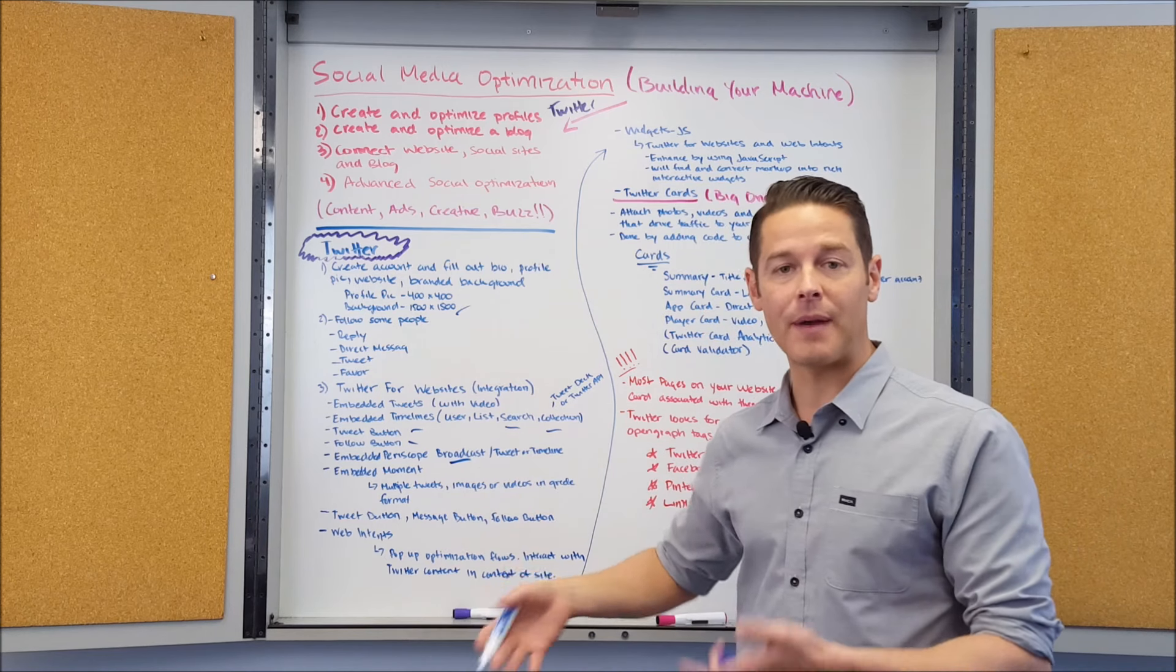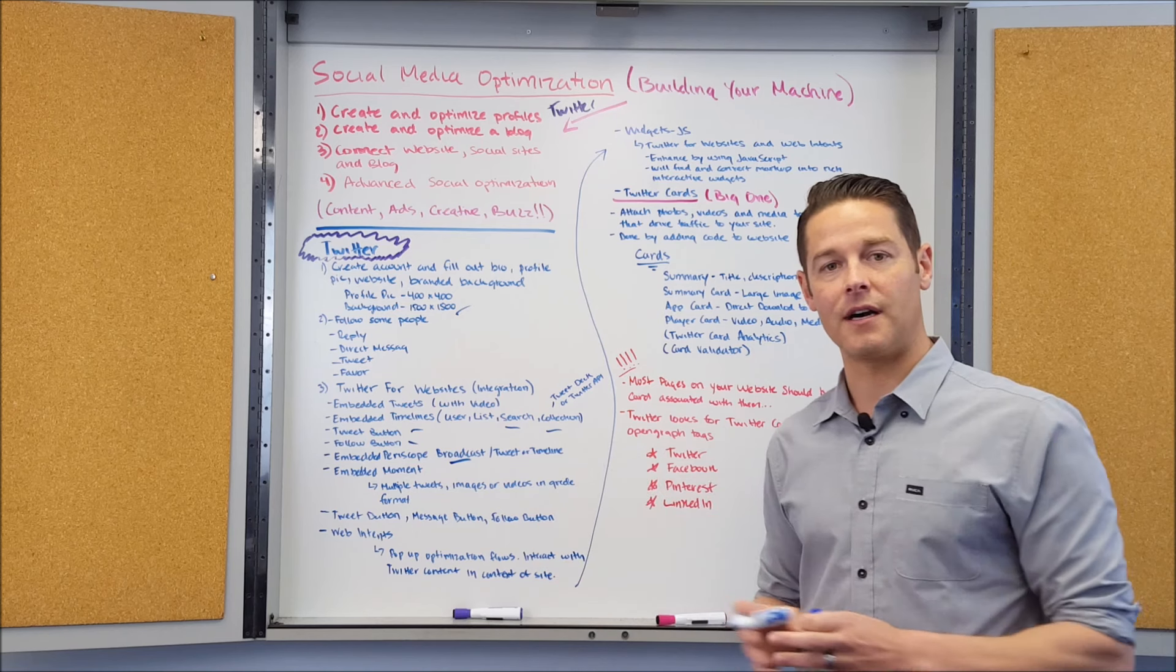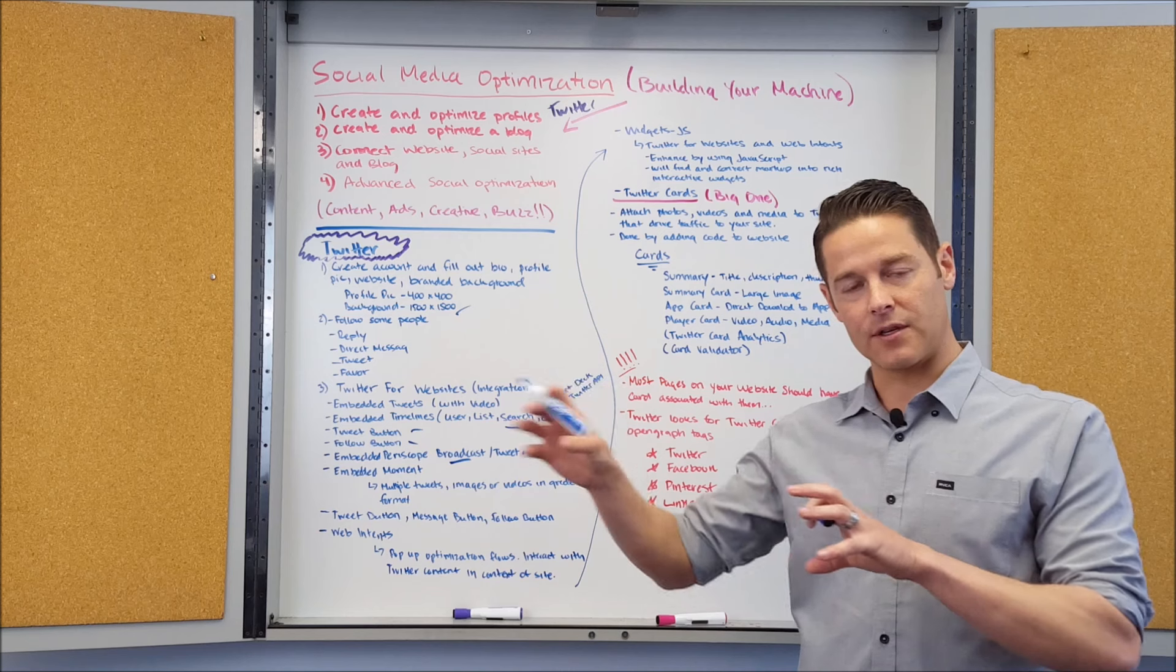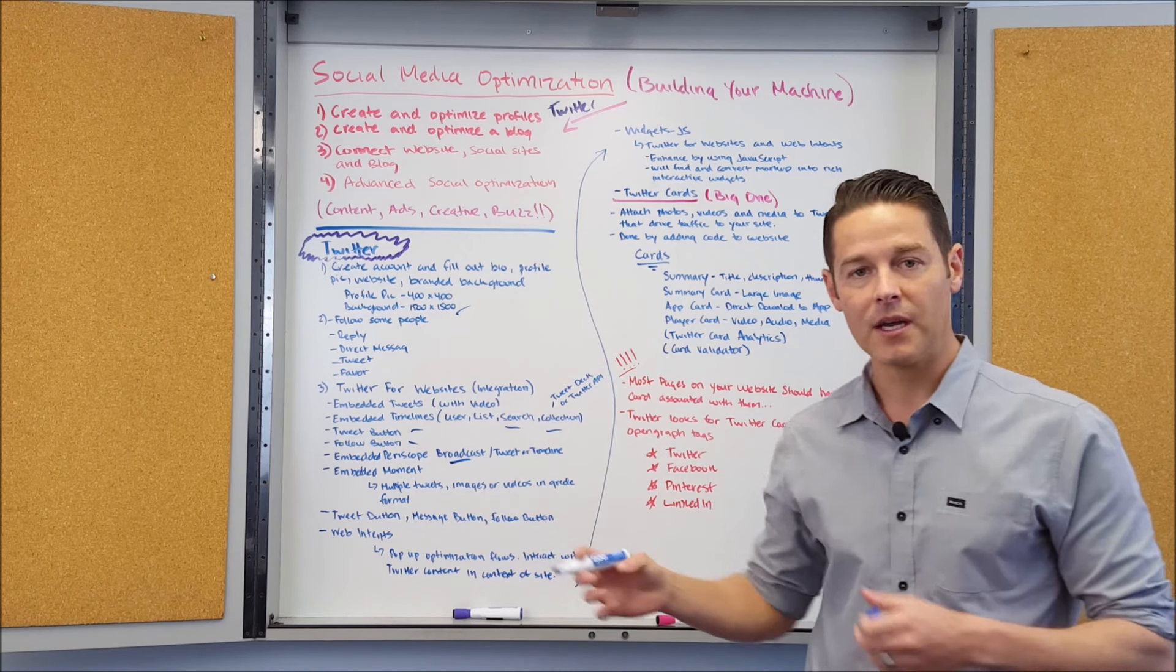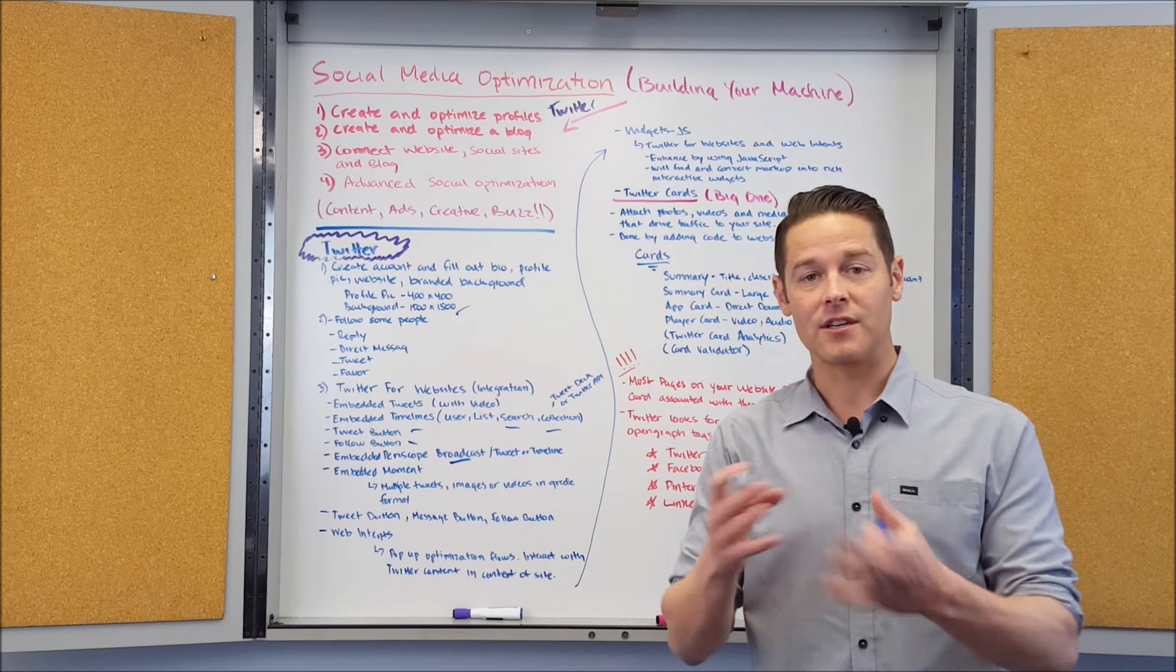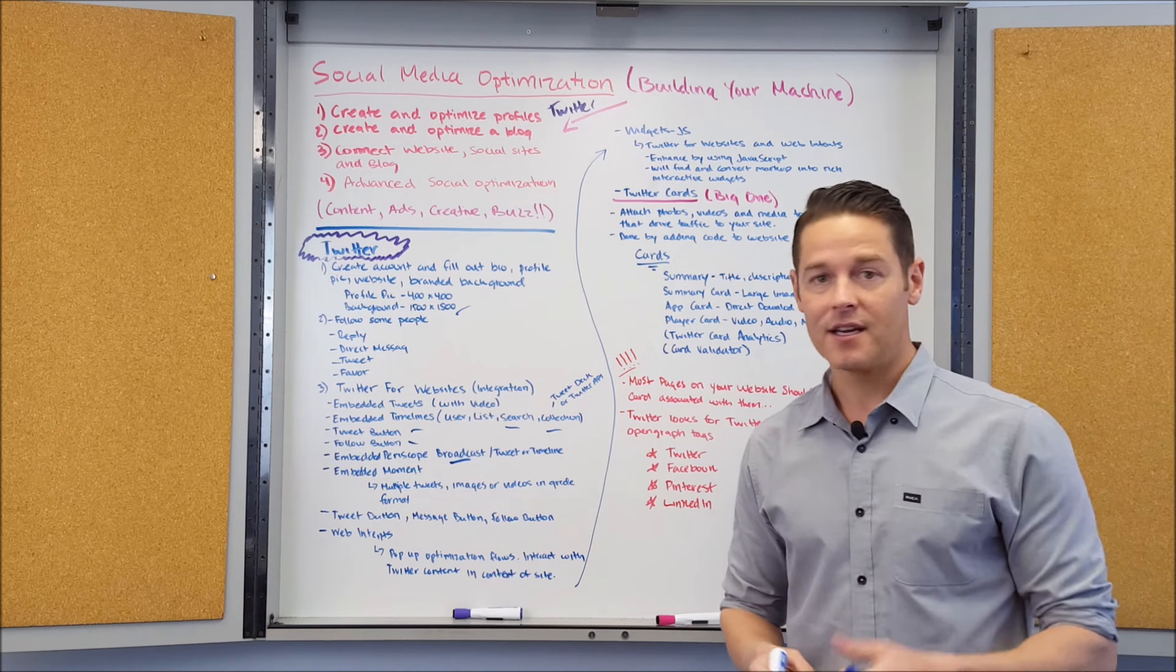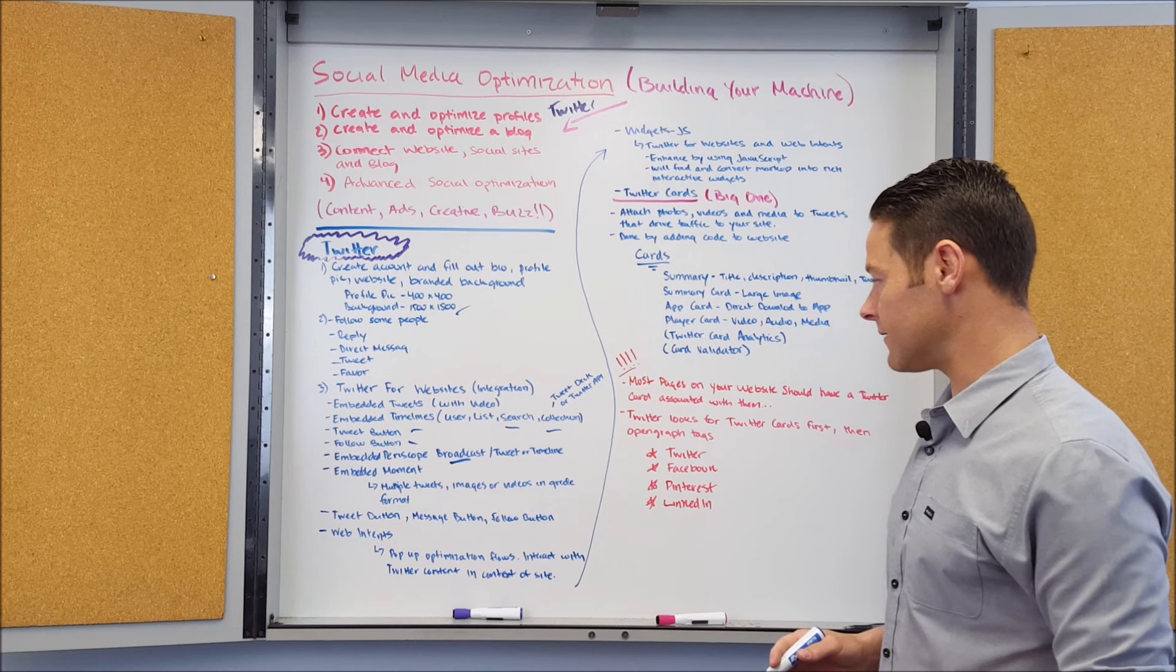A great example: you can embed Periscope broadcast. Periscope's the live streaming service that Twitter offers. It's a little bit disjointed the way that they've done it—it's not necessarily through Twitter, it's through Periscope—but you can take that and then you can embed that. So if you have a live Periscope, you can display that on your own website, which can be really cool for live events and other things that you want to broadcast live.